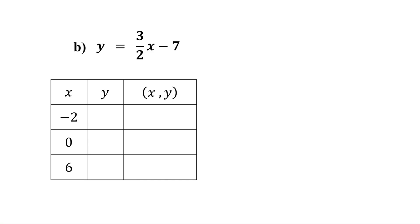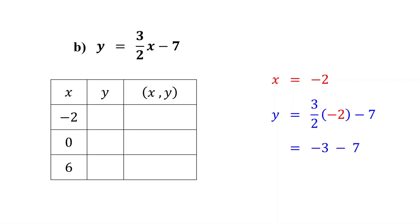The value of x is given as negative two, so substitute negative two for x and solve for y. Three halves times negative two is negative three, because three times negative two is negative six, and negative six divided by two is negative three. Negative three minus seven equals negative ten. Fill in negative ten for y in the table. So the ordered pair (-2, -10) is a solution to the equation.